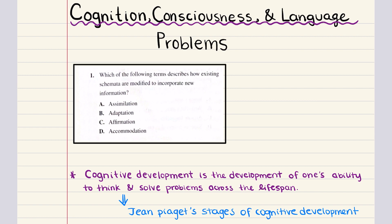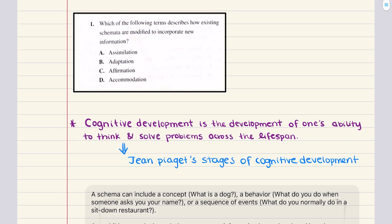Let's go ahead and get started with problem number one. Problem number one says which of the following terms describes how existing schemas are modified to incorporate new information? A says assimilation, B says adaptation, C says affirmation, and D says accommodation.